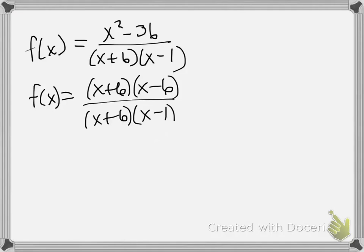Well, what happens? Again, the x plus 6 cancels, and so I'm left with my simplified function as x minus 6 divided by x minus 1.